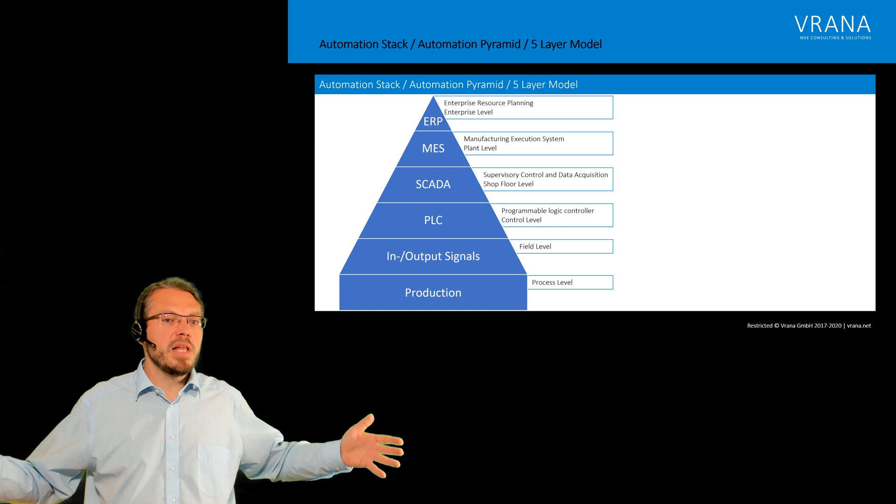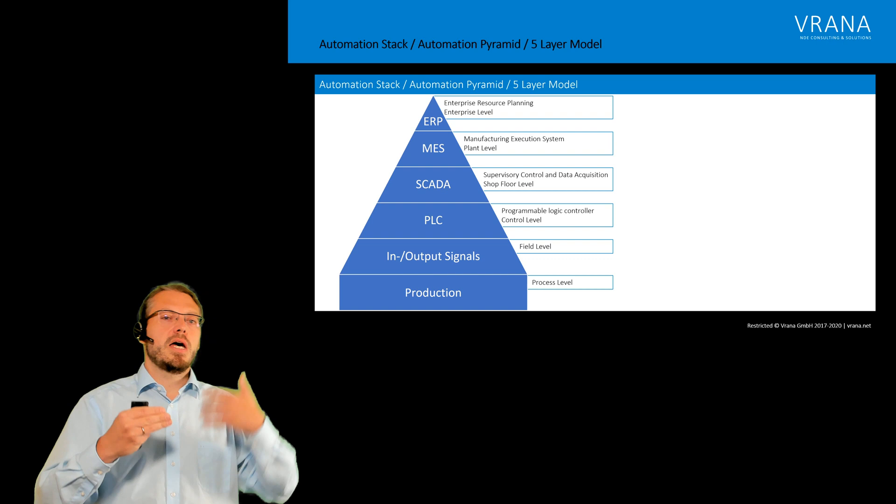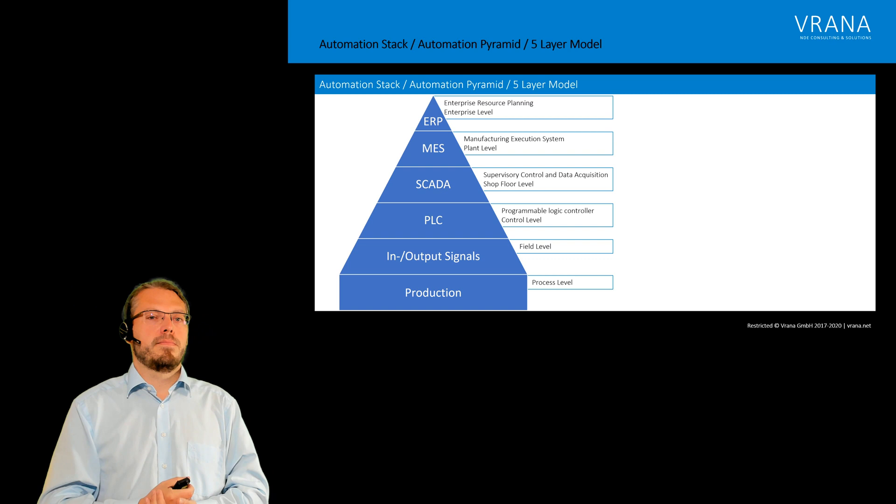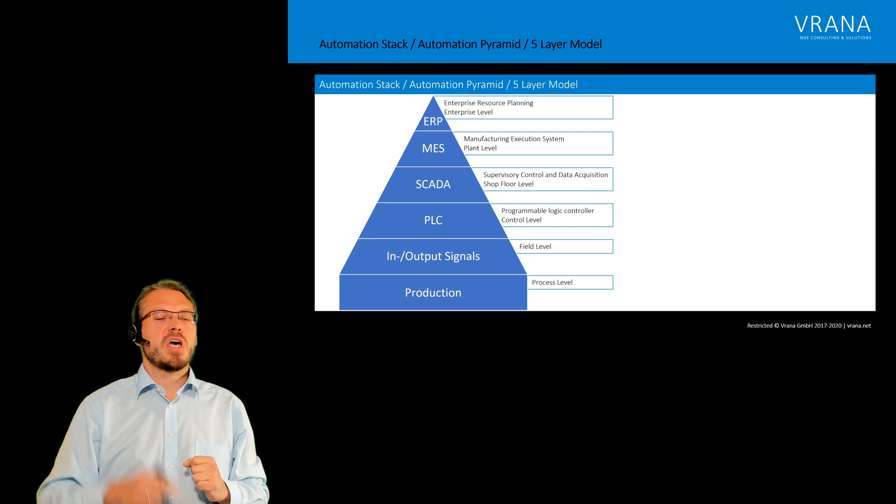Once you produce something, you are collecting data. Data is collected through your input and output, brought into the PLC, given to the SCADA system. From SCADA it goes up to MES and ERP. So planning is going from top downwards, and your data feed is from bottom up.